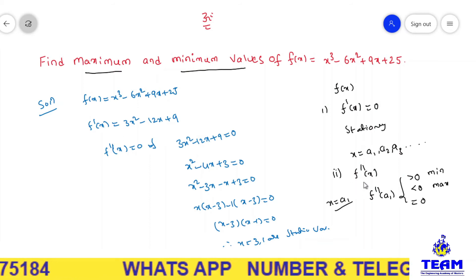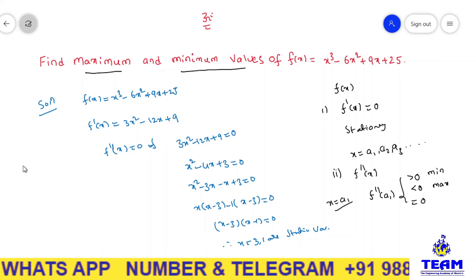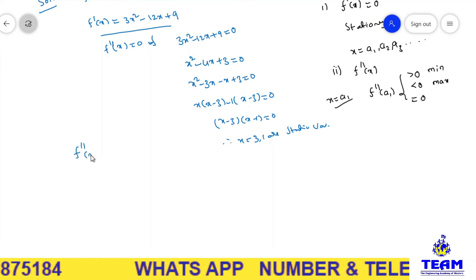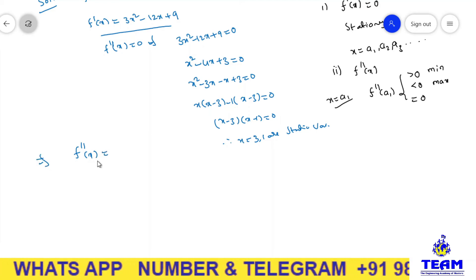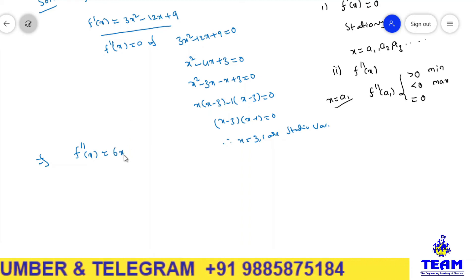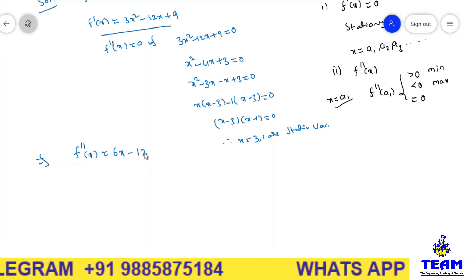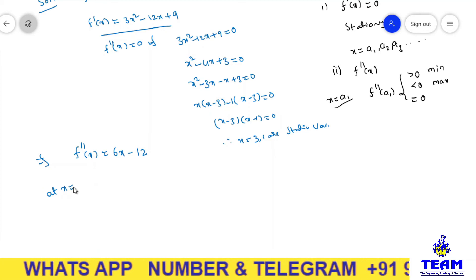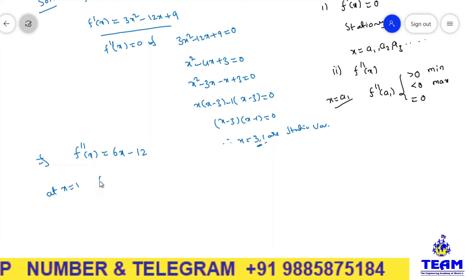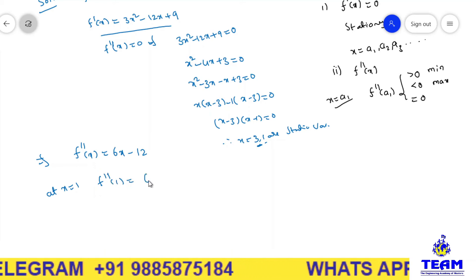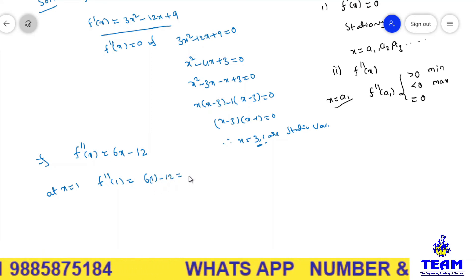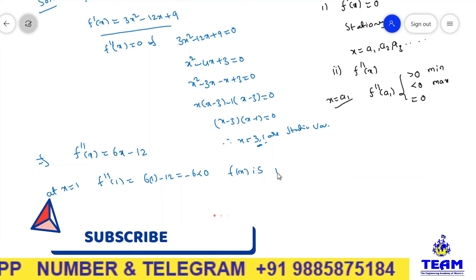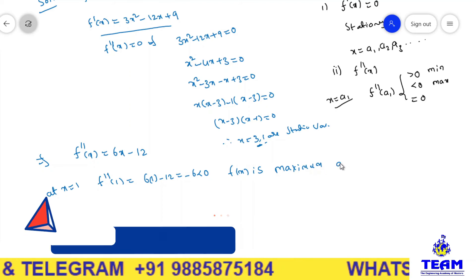After getting the stationary values, we find the double derivative. We have f dash of x equal to 3x square minus 12x plus 9, so f double dash of x equals 6x minus 12. At x equal to 1: f double dash of 1 equals 6 minus 12 equals negative 6, which is less than 0. So f of x is maximum at x equal to 1.